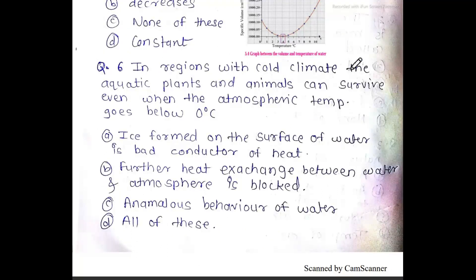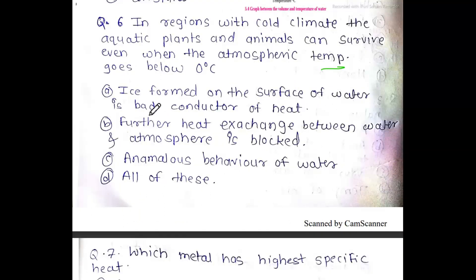Next MCQ: in regions with a cold climate, aquatic plants and animals can survive even when atmospheric temperature goes below 0 degrees Celsius. This is because ice forms on the surface of the water and is a bad conductor of heat, blocking further heat exchange between the water and the atmosphere — which is the anomalous behavior of water.